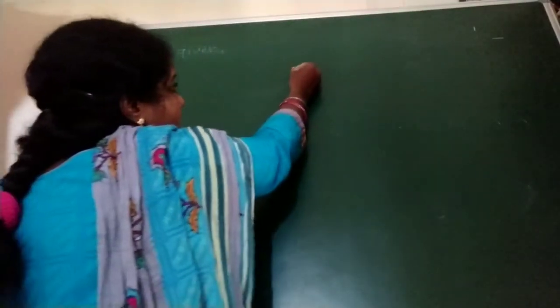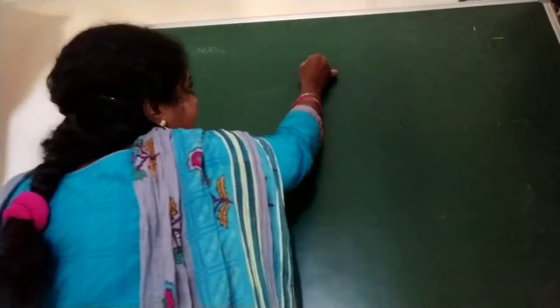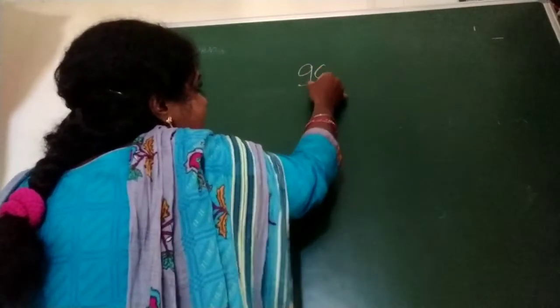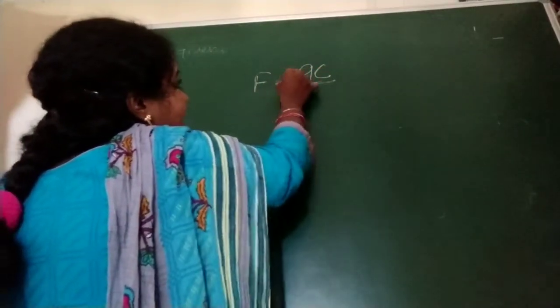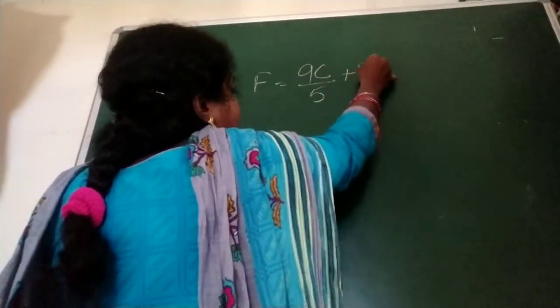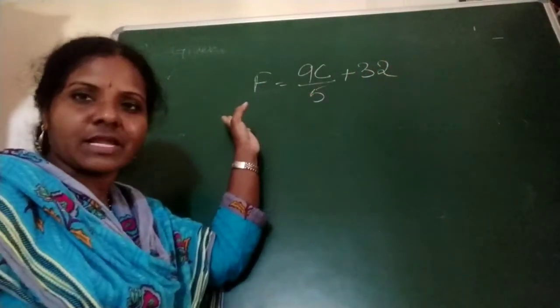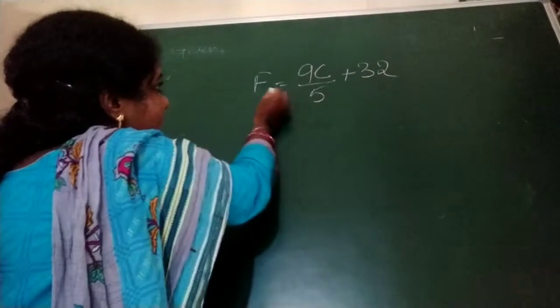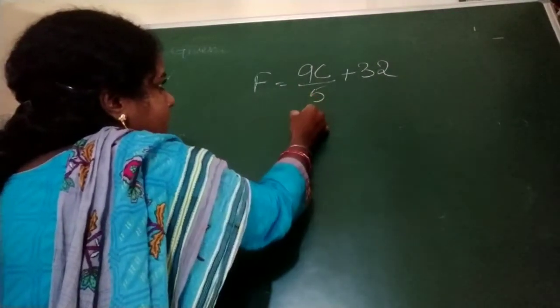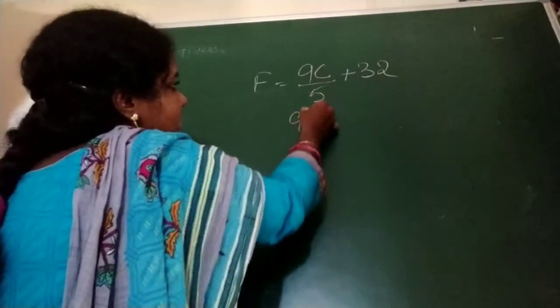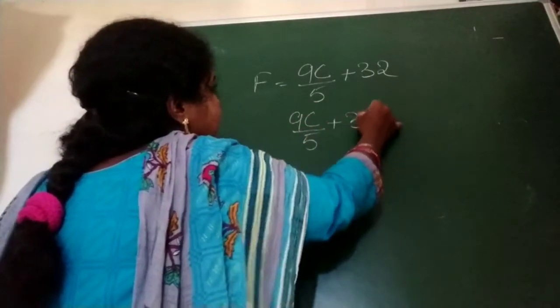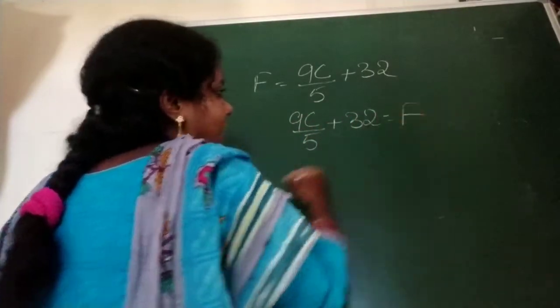What is the formula for Celsius to Fahrenheit? I said F equal to 9C by 5 plus 32. This is converting Celsius to Fahrenheit. Now just see,